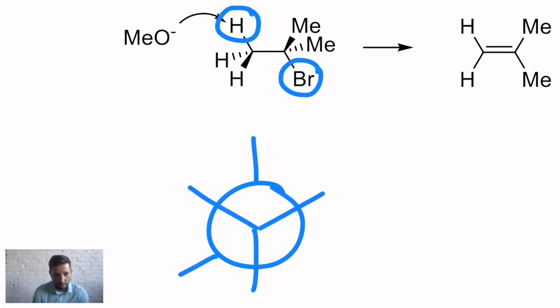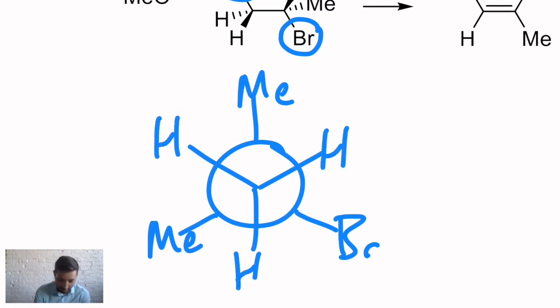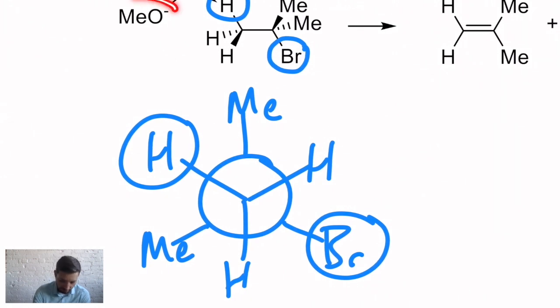Looking down the carbon-carbon bond. If we draw our bromine right there, and then we have methyls on the same carbon as the bromine, and we have three hydrogens on the other carbon, in this case in the front of the Newman projection, the hydrogen that goes is the one that's anti to the bromine. That's what that means. So in this case, our base, I'm using methoxide here. Methoxide will take away that H.